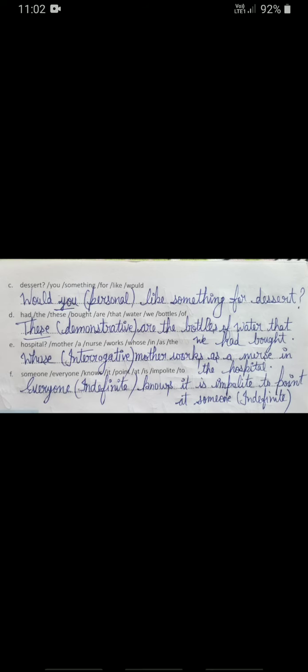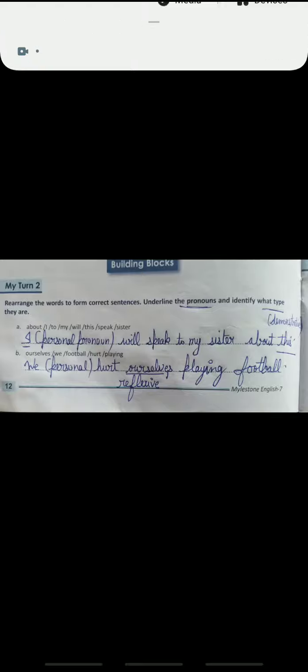Next one: 'Everyone knows it is implied to point at someone.' 'Everyone' is an indefinite pronoun, and 'someone' is also indefinite. Words like 'everyone,' 'everybody,' and 'someone' are indefinite pronouns. This is a clear and easy exercise — please follow it in your practice book. Thanks, have a nice day.